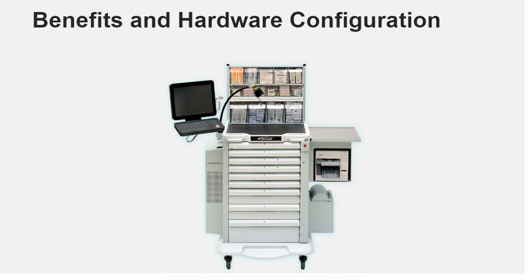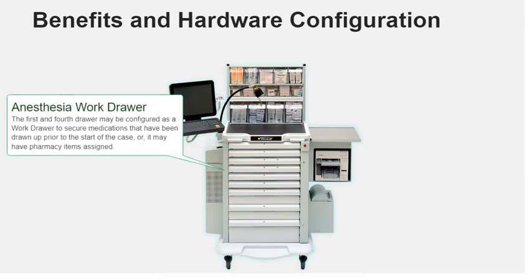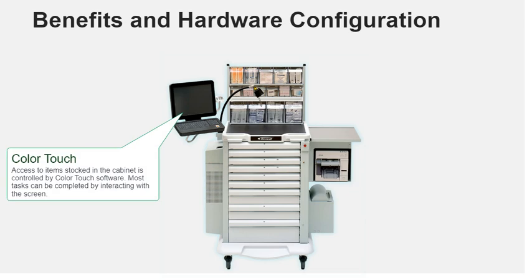Let's look at the Anesthesia Workstation now. The Anesthesia Work Drawer is for providers that stand during procedures. The top drawer of the cabinet is typically configured as the Anesthesia Work Drawer. Alternatively, it may have pharmacy items assigned to it. The first and fourth drawer may be configured as a work drawer to secure medications drawn up prior to the start of the case, or it may have pharmacy items assigned. Access to items stocked in the cabinet is controlled by Color Touch software, and most tasks can be completed by interacting with the screen.